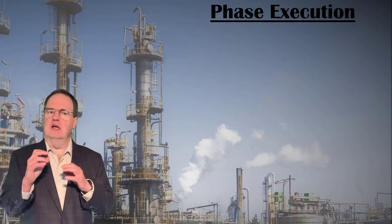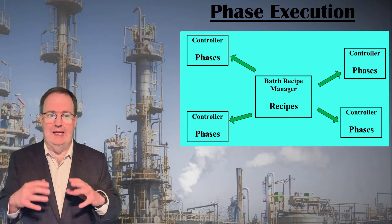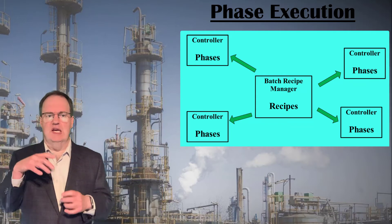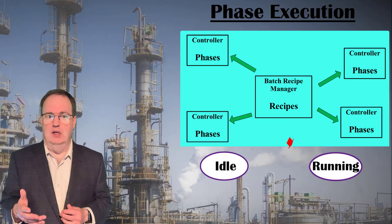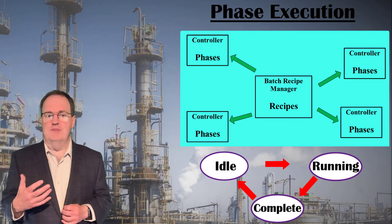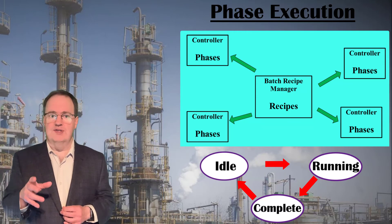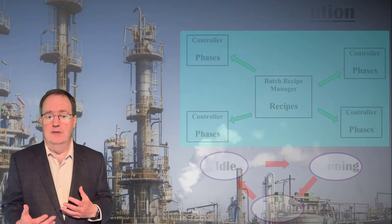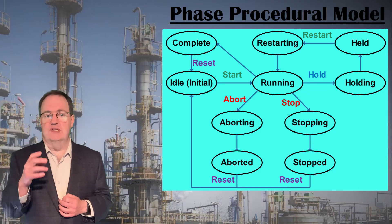When a unit recipe sends a command for a phase to execute, unit recipes often reside in a batch recipe manager application on a server for the whole plant. The unit-specific phases, on the other hand, reside on high-speed controllers that are also cycling control loops and interlocks several times a second. A phase sits idle until called to action by a recipe, then ideally runs to completion. But as with all things in a process plant, we have to plan for when things go wrong. If a potential hazard is detected, interlocks or an operator might pause or stop an entire batch recipe or just a specific phase. The S88 standard has a phase procedural model that addresses this, which all control system manufacturers support.